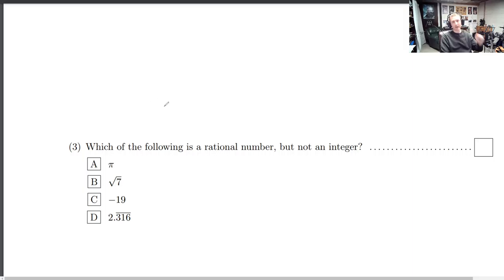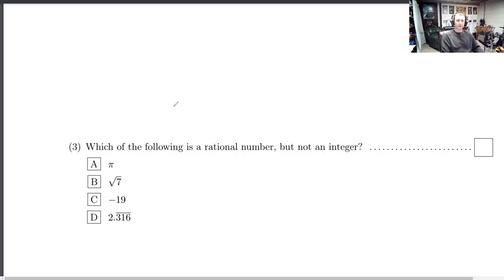For the next problem, we've got a multiple choice question. On this final, I didn't put any multiple choice questions. I put true-false questions instead. So this one's a little bit out of sorts, but that's okay. It's good to know what these are. So what is a rational number, and what is an integer? So remember,